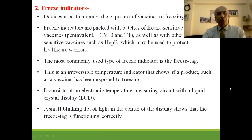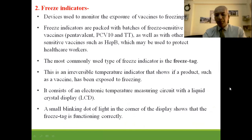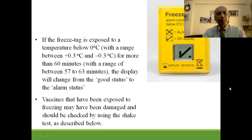Freeze indicators are devices used to monitor vaccine exposure to freezing temperatures. They are packed with batches of freeze-sensitive vaccines, especially pentavalent, PCV, and TT. The most common type is a freeze tag — an irreversible temperature indicator with an electronic circuit and LCD display. A small blinking dot shows it is functioning properly. If exposed to below 0 degrees centigrade for more than 60 minutes, the display changes from good status to alarm status, indicating possible damage.